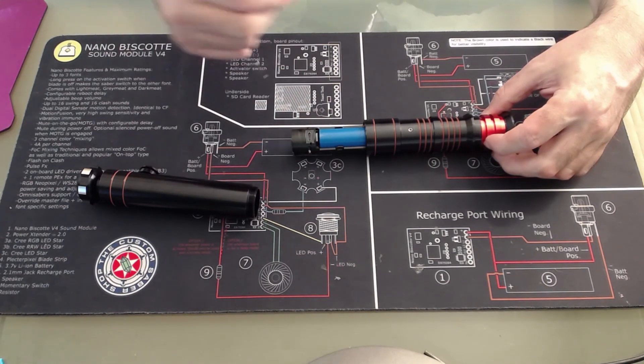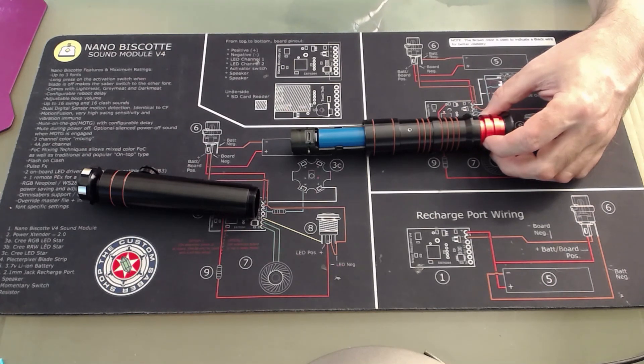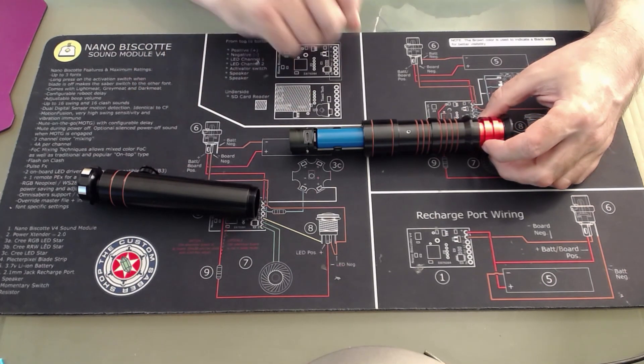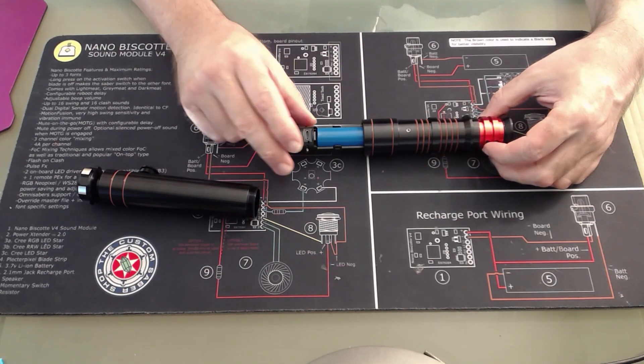You then put your USB cable into any standard USB supply, be it a computer or maybe a USB phone charger, and plug your USB-C plug into your saber.